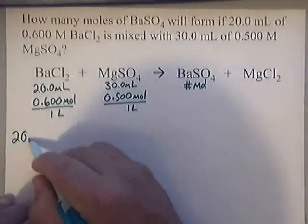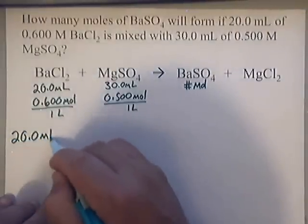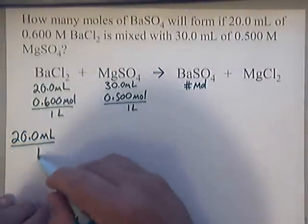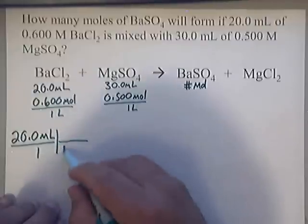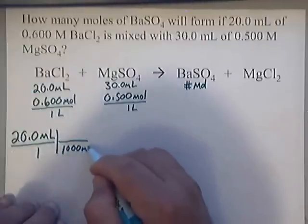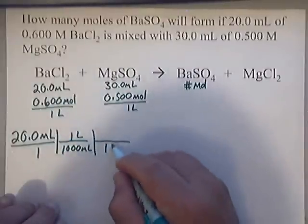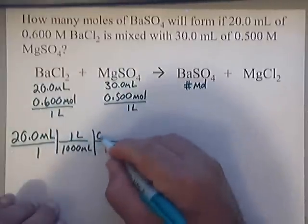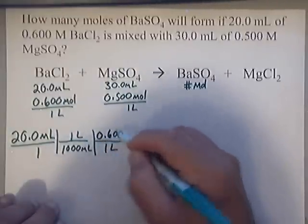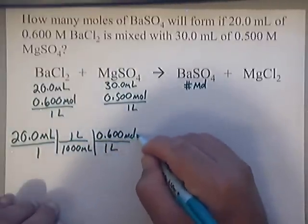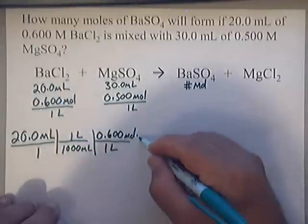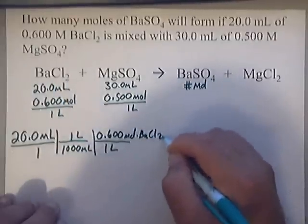That will be 20.0 milliliters. I'm going to put that over 1, convert that to liters. I know that there's 1,000 milliliters in 1 liter. After that, I'm going to use this. In 1 liter, there is 0.600 moles of BaCl₂.